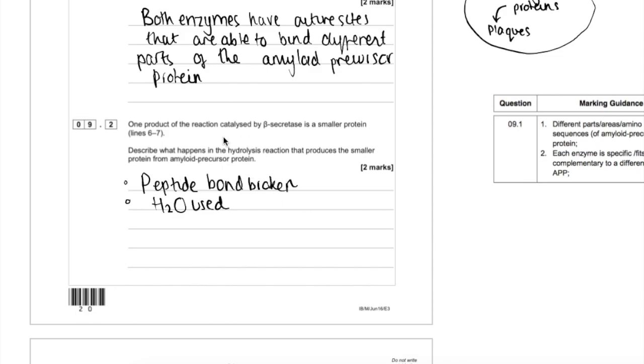So the next part: describe what happens in the hydrolysis reaction that produces the smaller protein from amyloid precursor protein. This is testing your knowledge of hydrolysis reactions and also of proteins. The general definition of hydrolysis reaction: it breaks a molecule into smaller molecules by breaking a bond and requiring a water molecule.